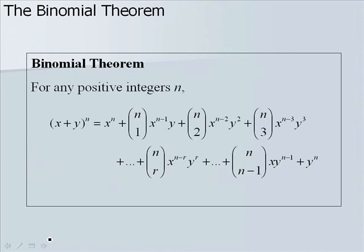Here we have the Binomial Theorem, which lists out what happens when we expand x plus y to the n. The variables on x to the n decrease and the variables on y increase. We have n choose 1 all the way up to n choose n minus 1 for the coefficient values in between x to the n and y to the n.